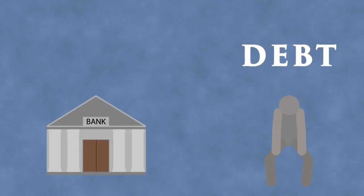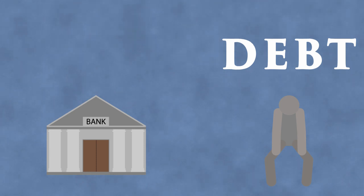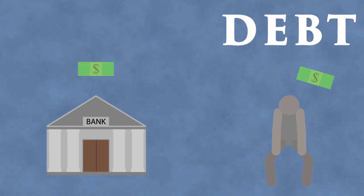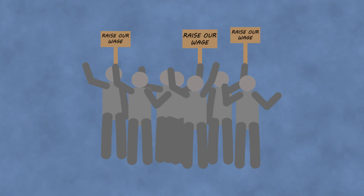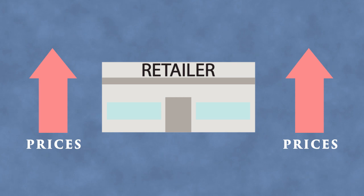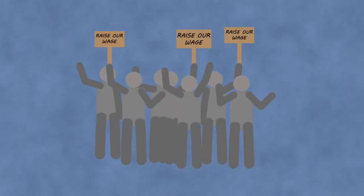As the debt load — public, corporate, and personal — increases, more money must be paid out by consumers to service the debt in loan repayments, taxes, and prices. This erodes consumer purchasing power, thus moving consumers to demand wage and salary increases to maintain their standard of living. But since wage and salary increases must eventually be recovered in increased prices, the general price level rises, thus increasing the need for more debt money to fill an increased gap — wash, rinse, and repeat.